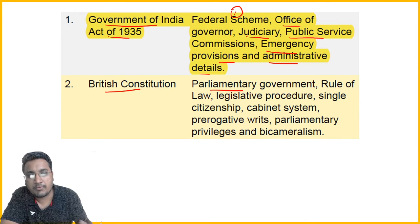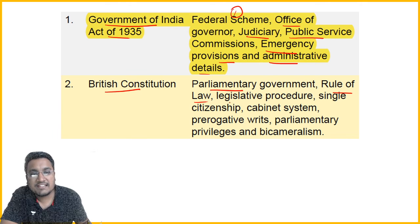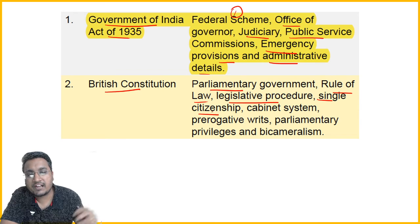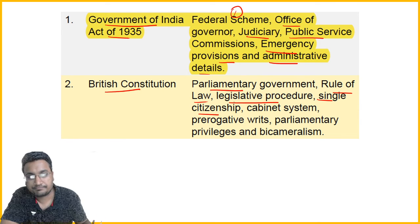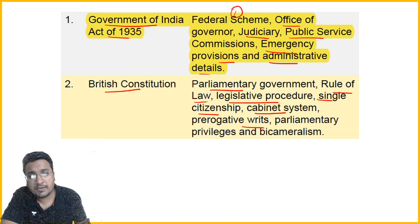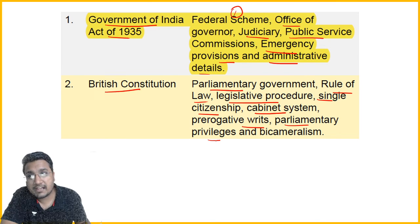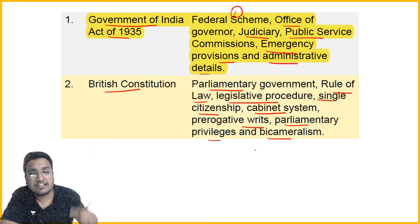From the British Constitution, we borrowed: parliamentary form of government — Britain also has a parliamentary form of government, Rule of Law, legislative procedure, single citizenship — even though we are a federation we have single citizenship, cabinet system, writs that the Supreme Court can issue in case of fundamental rights violation, parliamentary privileges for members of parliament, and bicameralism — that is Lok Sabha and Rajya Sabha, presence of two houses.